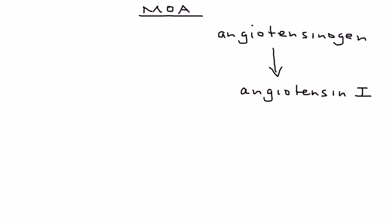First we have angiotensinogen, and that is converted to angiotensin, in particular angiotensin I. That is accomplished with the help of renin, and renin, of course, comes from the kidney.